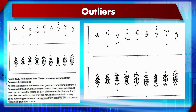Surprisingly, none of these are outliers, because they were all sampled from a perfectly normal Gaussian distribution. These are subsets sampled from a Gaussian, so they are not outliers at all. It is definitely not a good idea to trust your eye or your intuition to decide whether something is really an outlier.